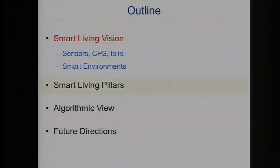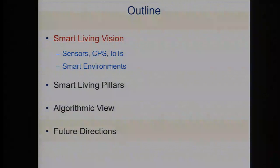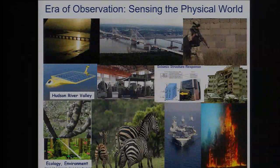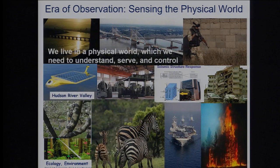The enabling technologies include sensors, cyber physical systems, and IoT. We'll define smart environments, then talk about a few pillars of smart living we've been working on. The fundamental problems involve lots of algorithmic work and theory. Since the advent of wireless sensors in the mid-90s, our world has been different because we can observe the physical world — collect data at scale. This gives us the power to understand the physical environment as well as control it.